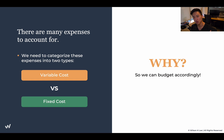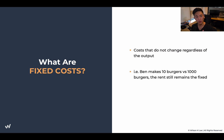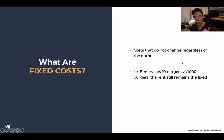We need to understand this so we can budget accordingly. First, what are fixed costs? Simply put, these are costs that do not change regardless of the output you produce. For instance, back to Ben's Burger — Ben makes 10 burgers: how much is rent? Ben makes 1,000 burgers: how much is rent? The rent remains unchanged. It doesn't matter how much the output is — the rent remains the same. That's why this is a fixed cost. Rent is a fixed cost as an example.